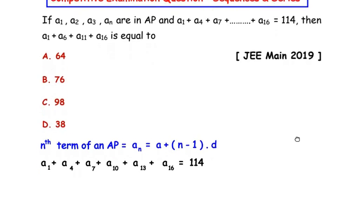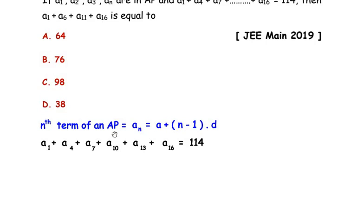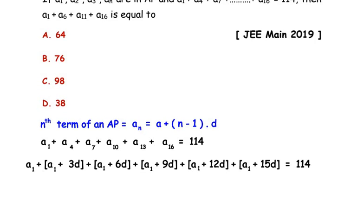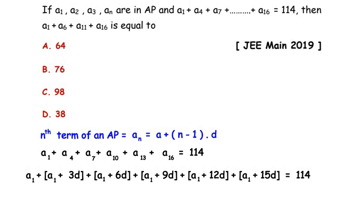Now the next step is to make use of the nth term of an AP formula and expand the given terms. The first term is a1 which stays the same as a1, plus a4. Now here n represents 4, we are making use of this formula. The first term for the series is going to be a1 as it is given in the series.